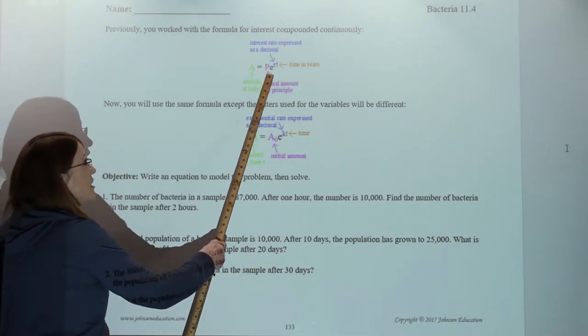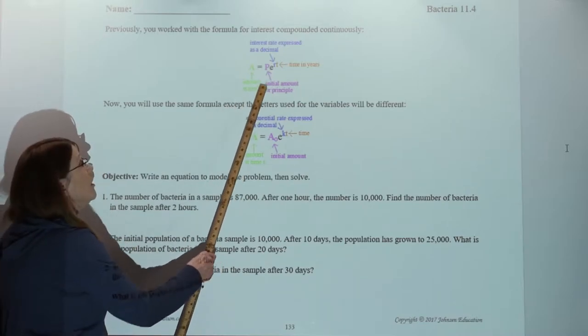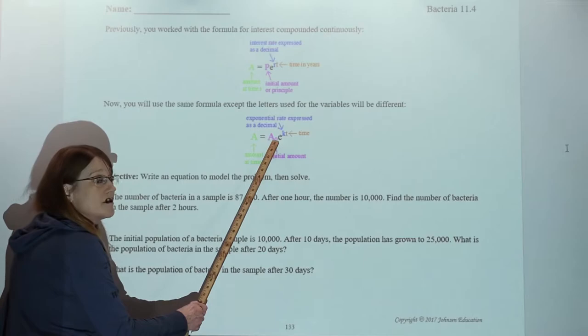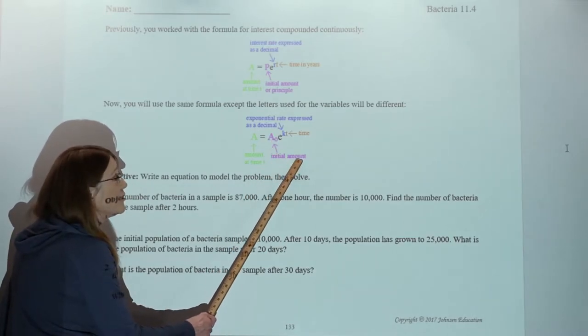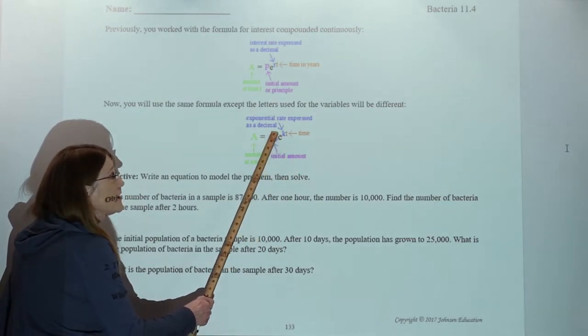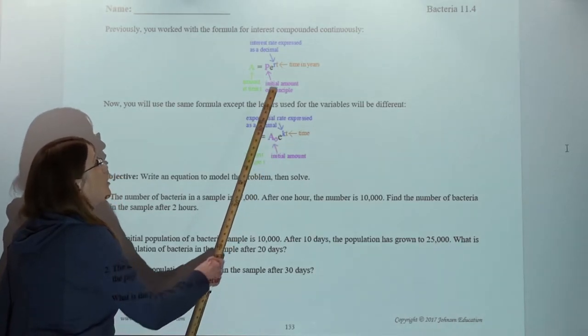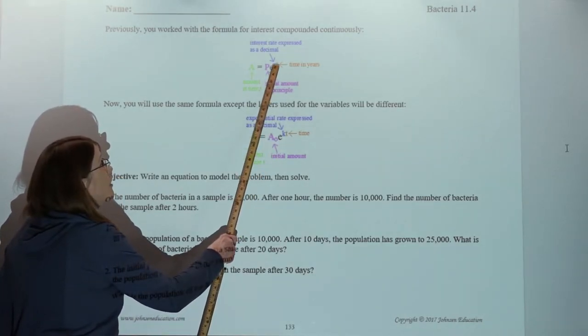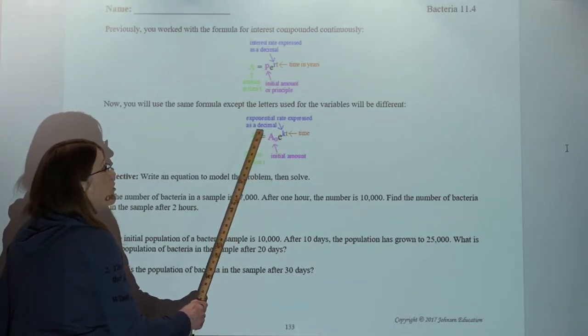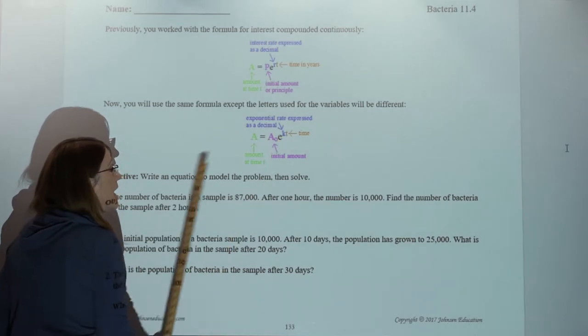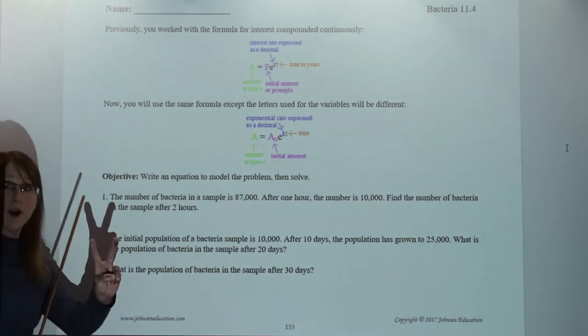So we're going to change, instead of using the P for principal, we're going to change and I'm going to use A sub-zero, representing the initial amount. Now this doesn't mean this is going to be zero, it just means the initial amount. We're going to change the R from interest rate to now we'll call it the exponential rate expressed as a decimal. There's your K. We've got two problems for today.